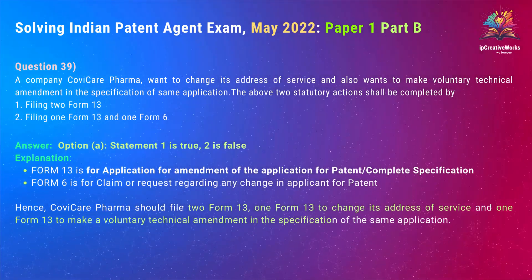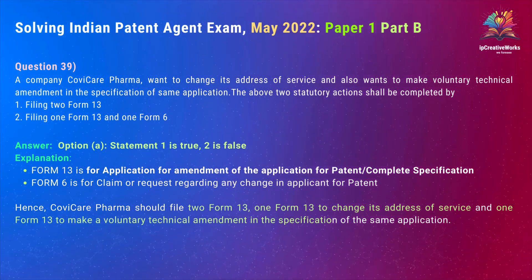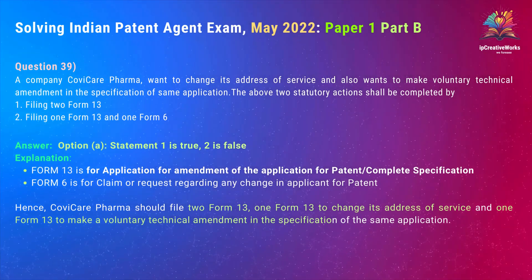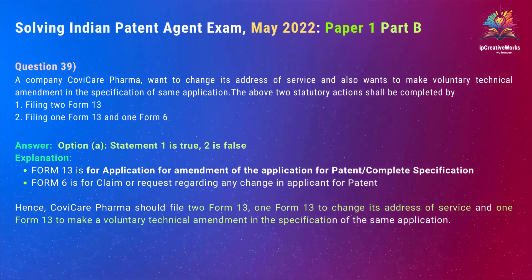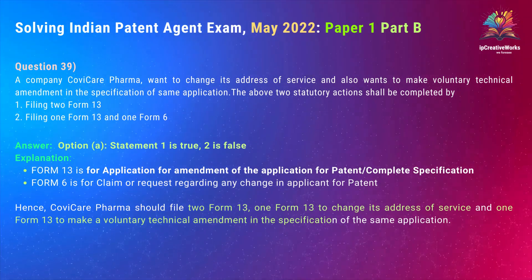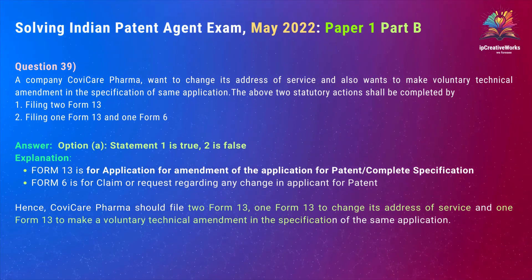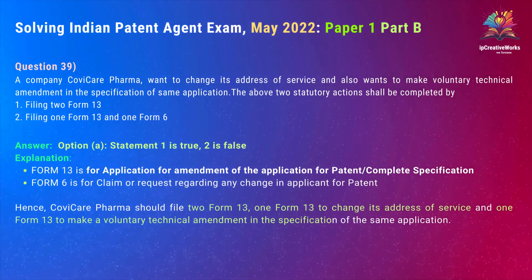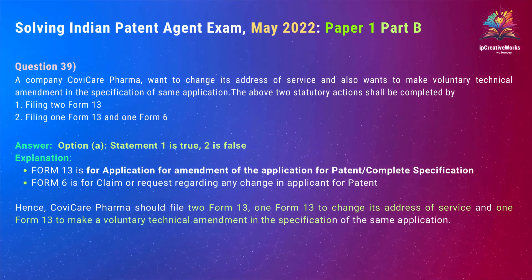Question 39: CoviCare Pharma wants to change its address of service and also wants to make a voluntary technical amendment in the specification of the same application. Statement 1: The above two statutory actions shall be completed by filing 2 Form 13s. Statement 2: Filing 1 Form 13 and 1 Form 6. The correct answer to Question 39 is Option A — Statement 1 is true, 2 is false. Form 13 is for amendment of the application for patent or complete specification. Form 6 is for a claim or request regarding any change in applicant for patent. Hence, CoviCare Pharma should file two Form 13s — one to change its address of service and one to make a voluntary technical amendment in the specification.